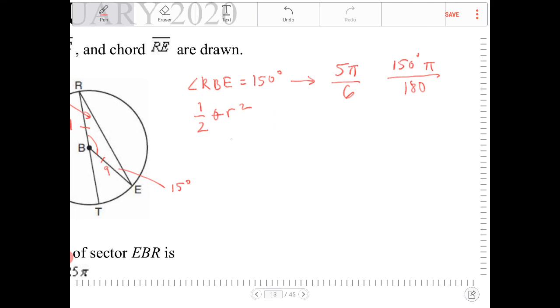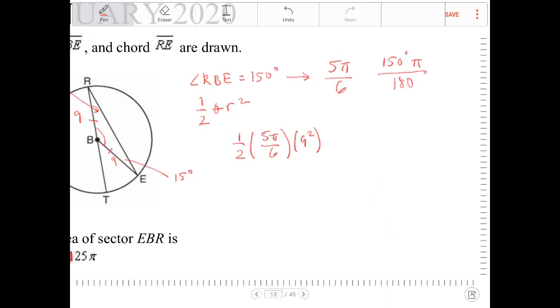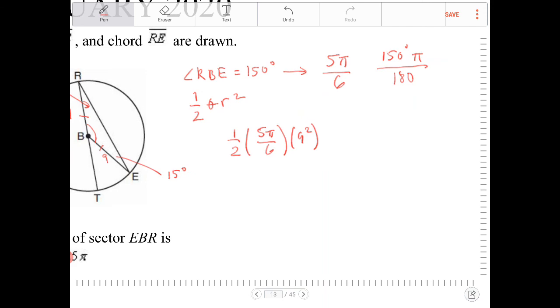So the area of a sector, getting back to this, is going to be 1 half, 5 pi over 6, times 9 squared. And if I go through the process of figuring this out, I'll end up with 5 pi over 2 times 6. I have 9 squared up there, right?